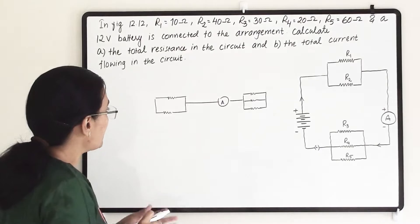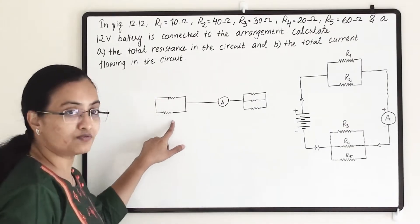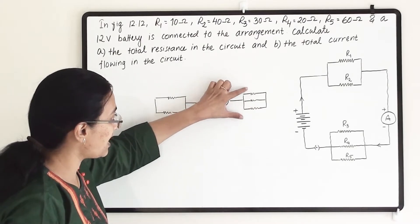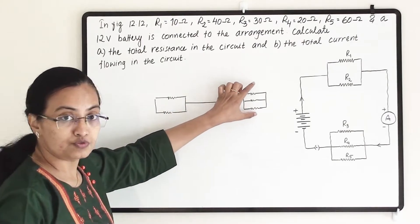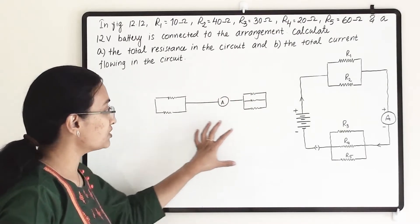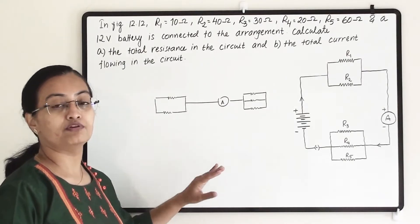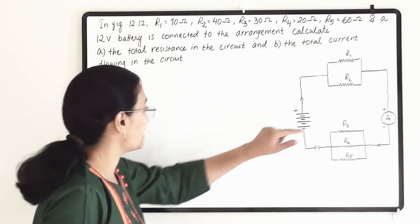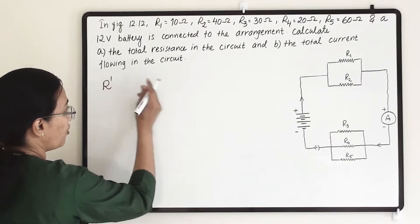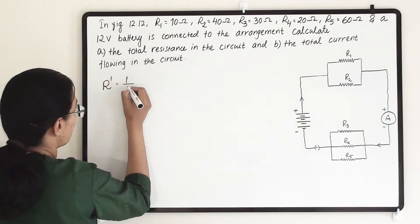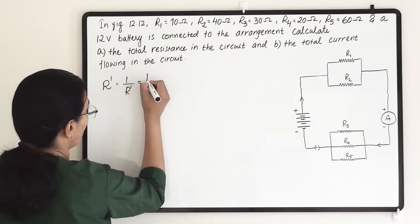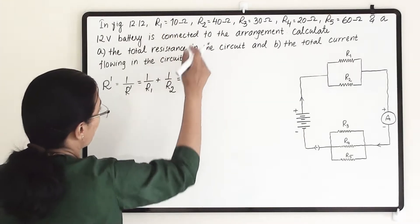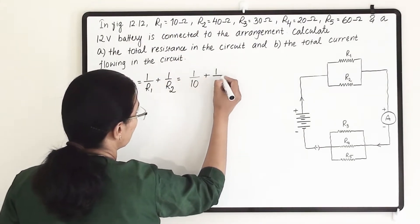So when we are calculating the combined resistance for R1 and R2 we use the parallel connection formula, and similarly for R3, R4, and R5. After that, since both units are in series, we will add them to find the total resistance. Let us first find the combined resistance for R1 and R2. We write R dash for this first unit: 1 divided by R dash equals 1 divided by R1 plus 1 divided by R2. The values for R1 and R2 are 10 and 40 ohm, so we write 1 divided by 10 plus 1 divided by 40.